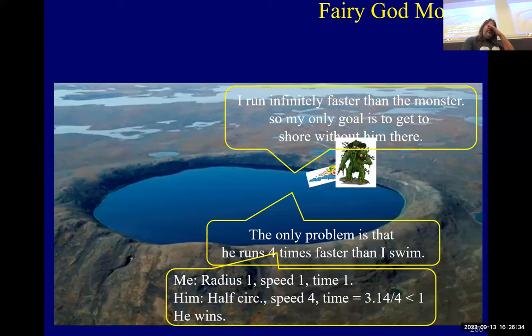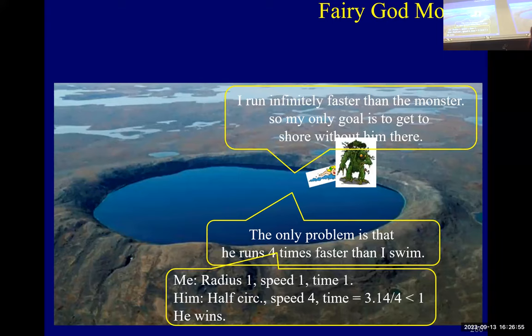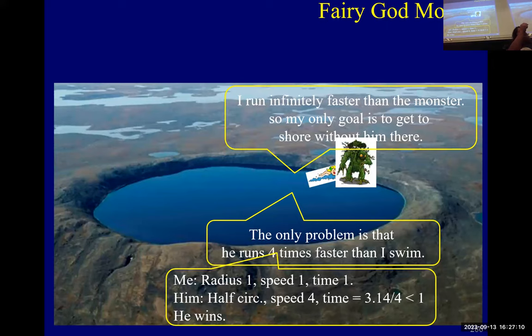Any ideas about how you might solve this? One sort of strategy, if you're actually doing this yourself and panicking, might be to always swim toward shore but as he runs, always swim away from him — so you'd do some sort of spiraling. That's probably what works, but analyzing that would require a certain amount of calculus that we're not up for. So we're not going to solve this by calculus.